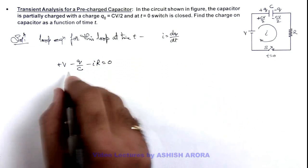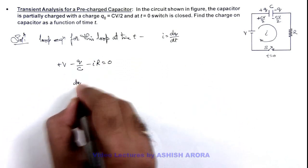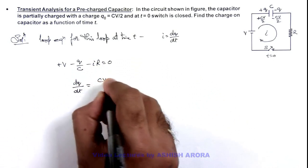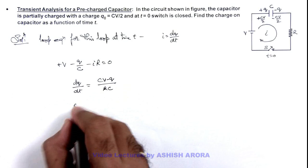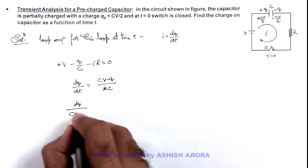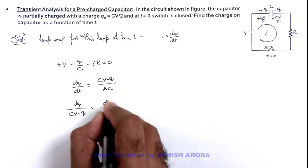On further simplifying this, we can get dq/dt equals (CV - q)/(RC). So here we can write further as dq/(CV - q) equals dt/(RC).